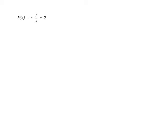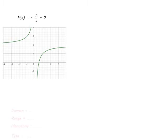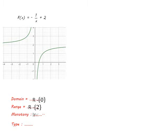For f(x) = -1/x + 2, the negative sign means the function will be drawn in the second and fourth quadrants, and the point of symmetry equals (0, 2). The function is shifted 2 units up on the y-axis, so the domain equals ℝ except 0 and the range equals ℝ except 2. The function increases on ℝ except 0. It is neither even nor odd.